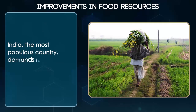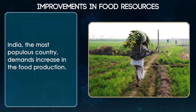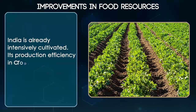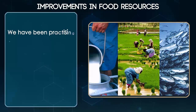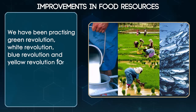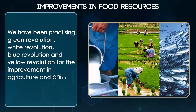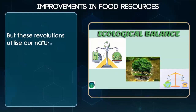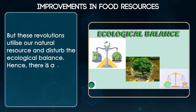India, the most populous country, demands an increase in food production. India is already intensively cultivated, so its production efficiency in crops should be increased. We have been practicing green revolution, white revolution, blue revolution and yellow revolution for the improvement in agriculture and animal husbandry. But these revolutions utilize our natural resources and disturb the ecological balance. Hence, there is a need for sustainable practice.